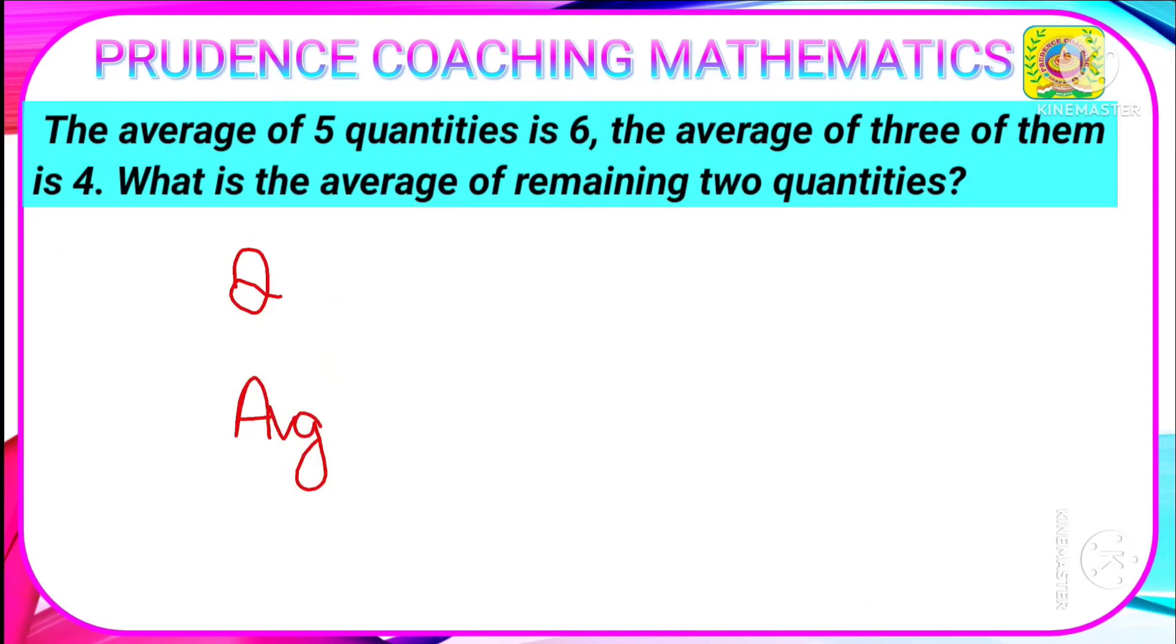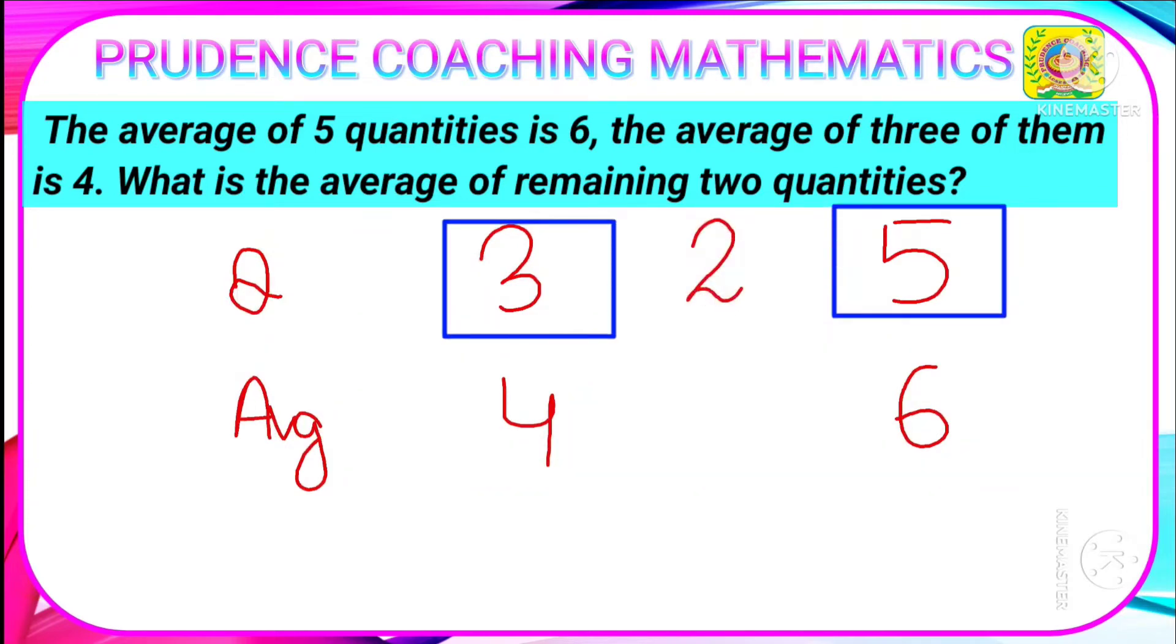So here in this question it is given that the average of 5 quantities is 6, and out of this 5 quantities the average of 3 quantities is given to be 4. You are asked to find out 5 minus 3, that is the average of remaining 2 quantities. Let us assume it to be X.